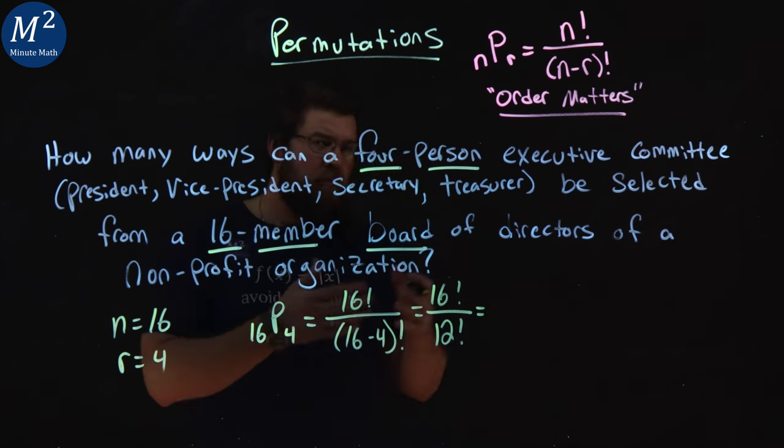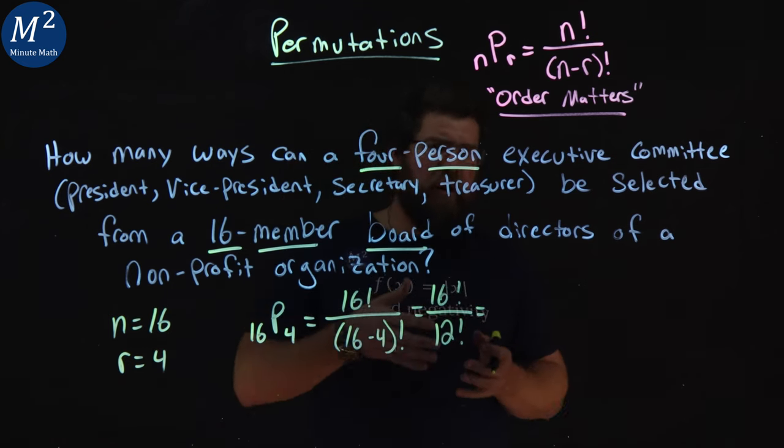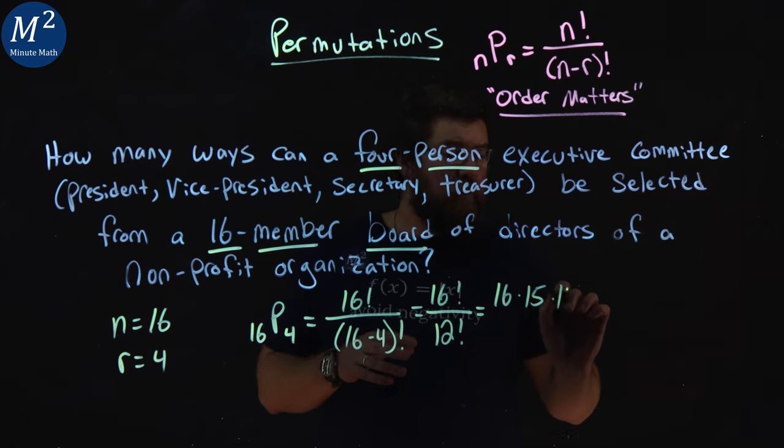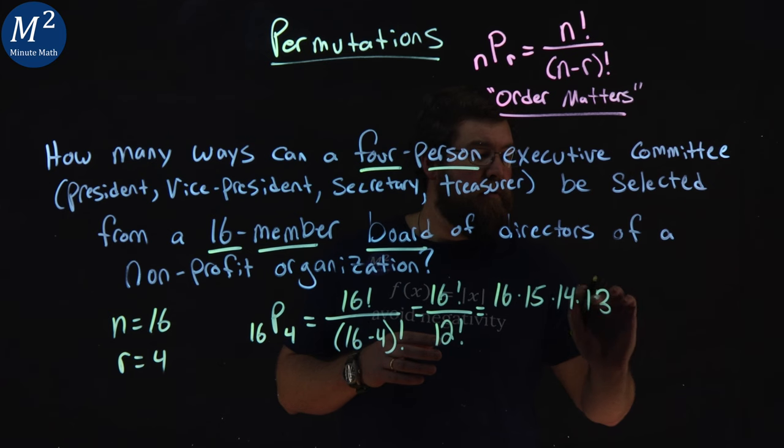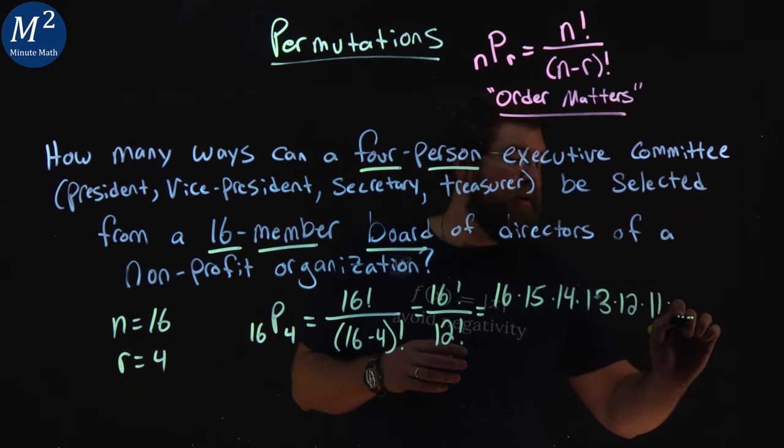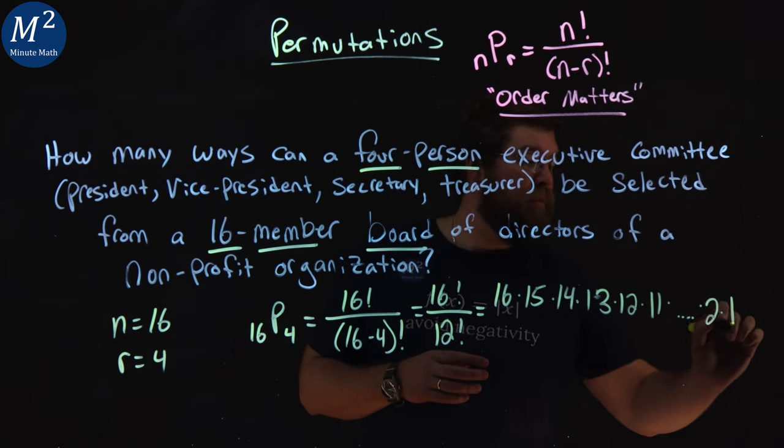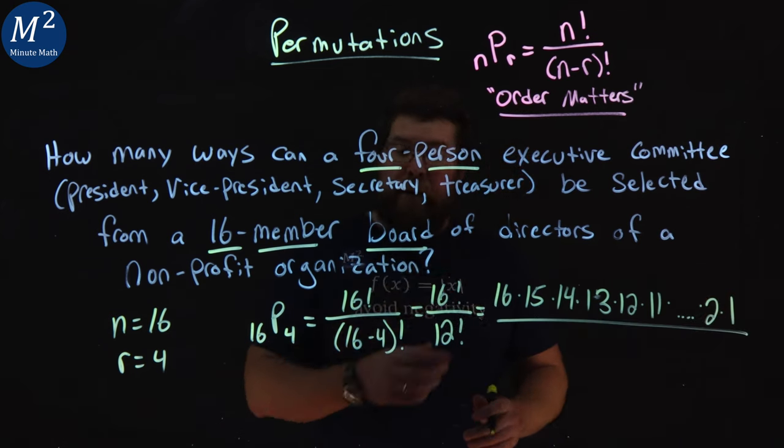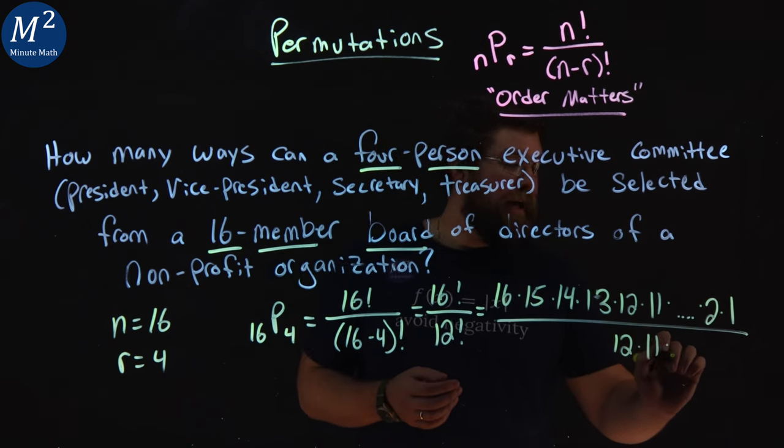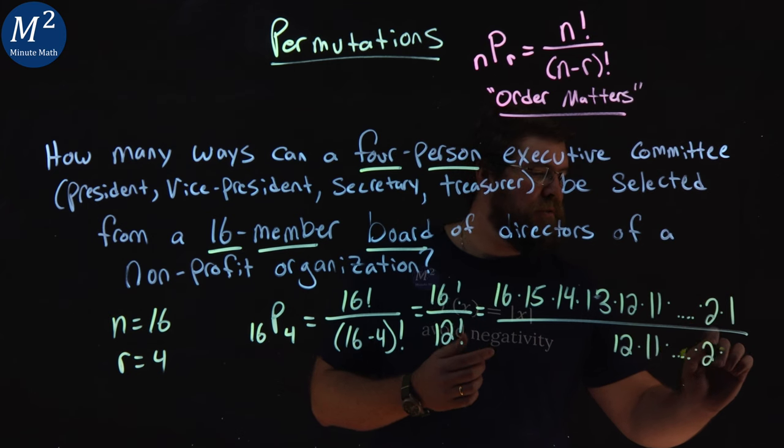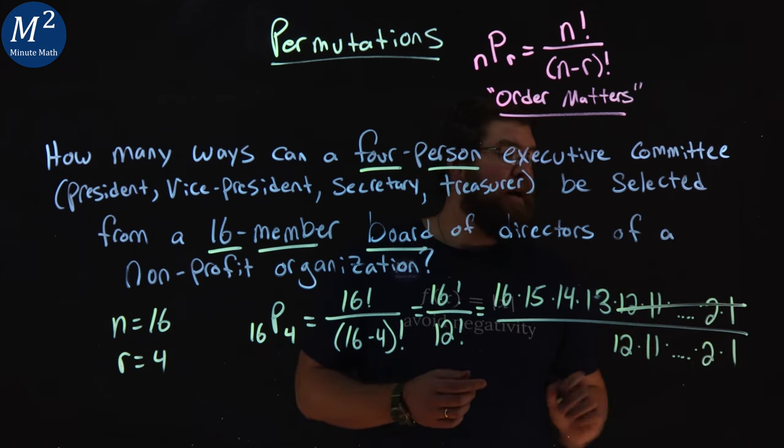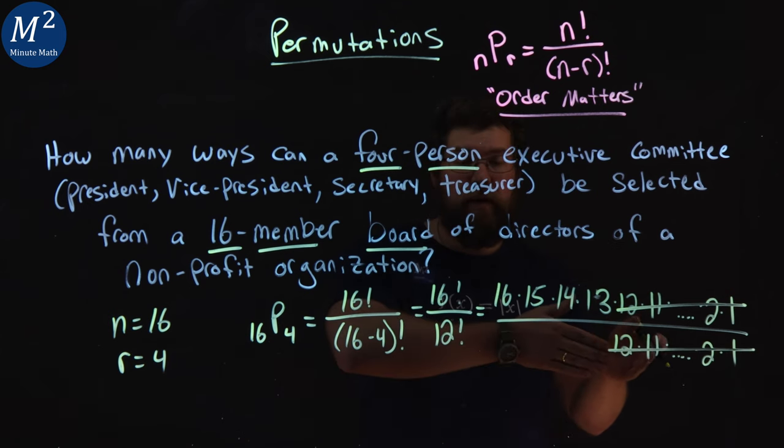And we can write all this out, but let's show what's going on here. We have 16 times 15 times 14 times 13 times 12 times 11 down to 2 times 1 for factorial. 12 factorial starts at 12, 12 times 11, and repeats the same process down to 2 times 1. This 12 down to 1 cancels in the numerator and denominator. That's why I like to write this out and cancel it before just typing in your calculator.